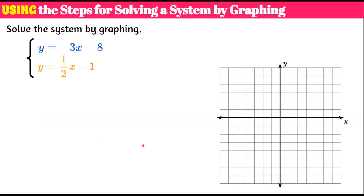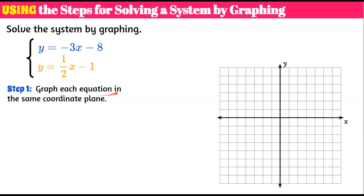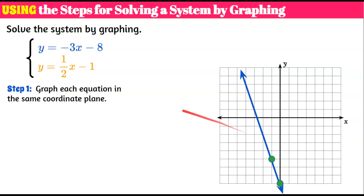I'm going to model those steps. Step one: graph each equation in the same coordinate plane. Starting with the blue equation, y equals negative 3x subtract 8 — the y-intercept is negative 8, so I plot a point there. My slope is negative 3, so I rise 3 and run negative 1. Since the slope is negative, the line must be falling left to right. That's our blue line.